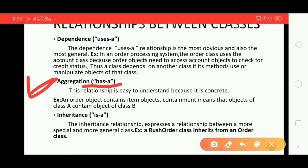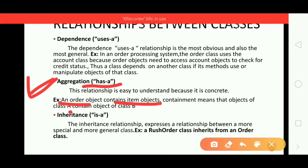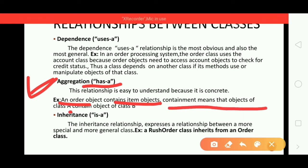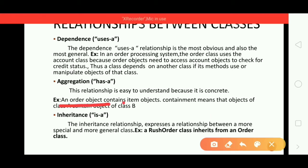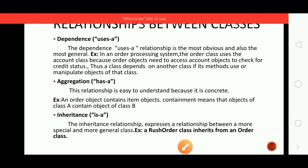If you want to process an order, you need to have an item object; otherwise you can't process the order. Once the order object contains the item object, only then can it process the next step. This is what containment means — order object contains item object — and this makes aggregation, whose relationship is 'has a'.